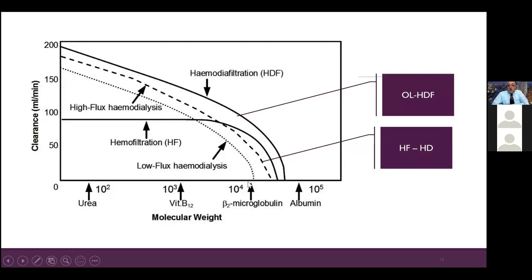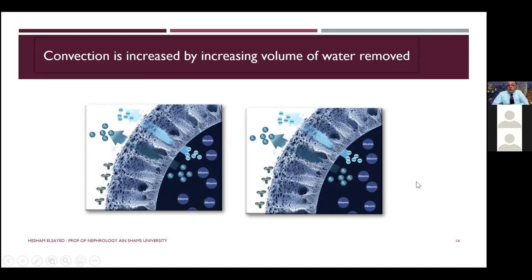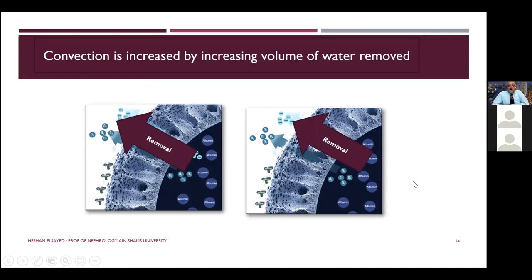With online HDF and high-flux dialysis, solutes removed extend beyond beta-2 microglobulin but stop before albumin — albumin loss should not exceed 3 grams per session. The area of removal includes beta-2 microglobulin, cytokines, and other middle molecules. Convection is increased by increasing the volume of water removal — typically 23 liters are removed during post-dilutional hemodiafiltration.